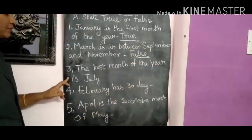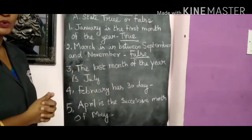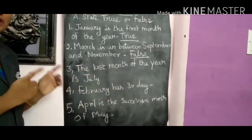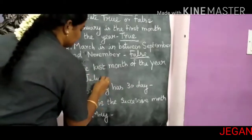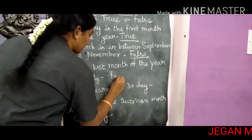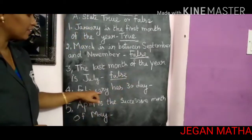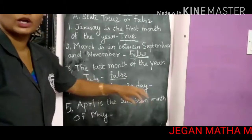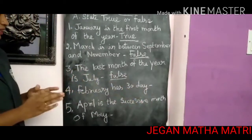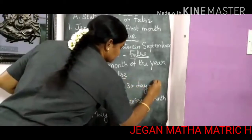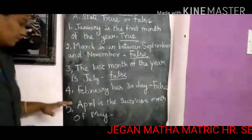Third question: The last month of the year is July. No — the last month of the year is December, so this sentence is FALSE. Fourth question: February has 30 days. No — February has 28 days, so this sentence is also FALSE.